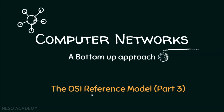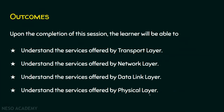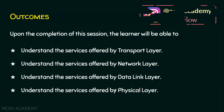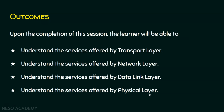Hello everyone. Welcome back to the next lecture on the computer network series. We are now in part three of the OSI reference model. Today we will see the remaining four layers. In the previous lecture we saw the application layer, presentation layer, and session layer. Today we will see the services offered by transport layer, network layer, data link layer, and physical layer.